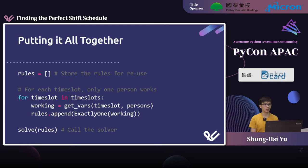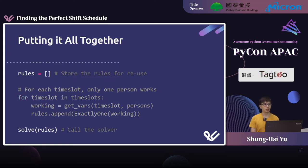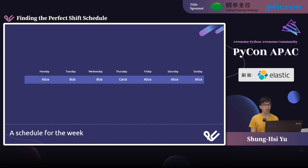Putting this all together: we now have seven days in our time slots, so we go through each time slot, retrieve all the Boolean variables associated with it, and using exactly_one ensure that exactly one worker will be working on each time slot. I'm also using a list to store the rules, making it easier to reuse them. Passing this list to the solver, we now get a schedule for the whole week.